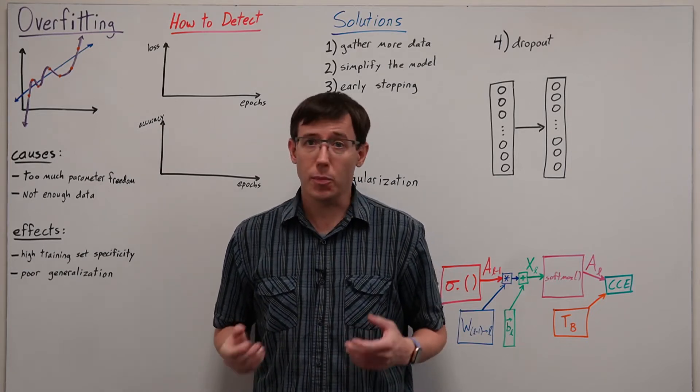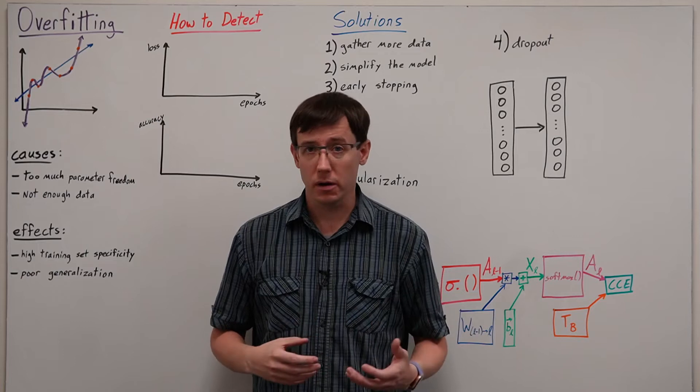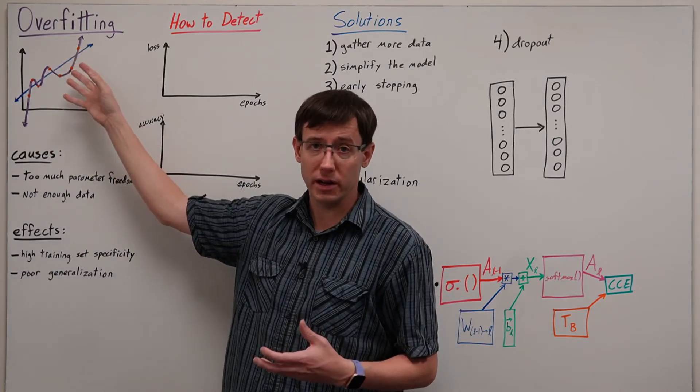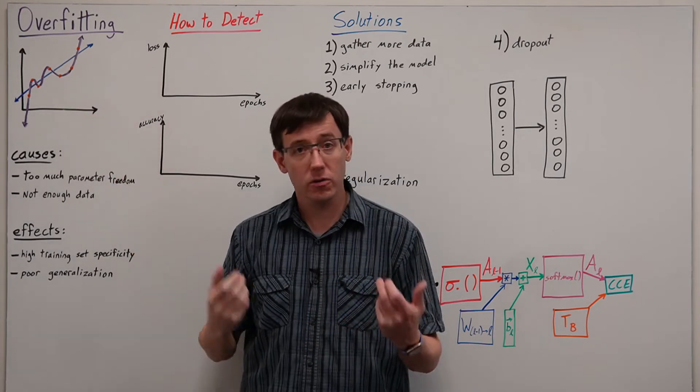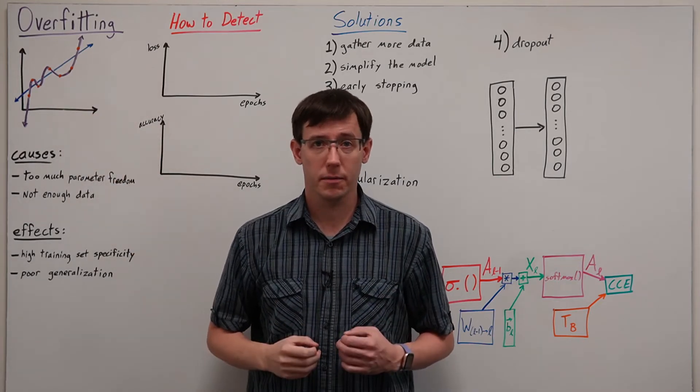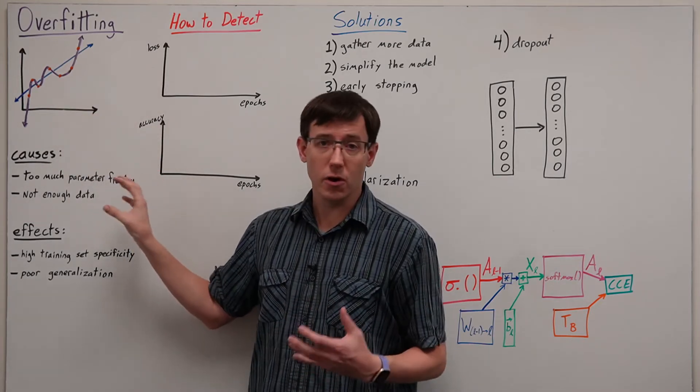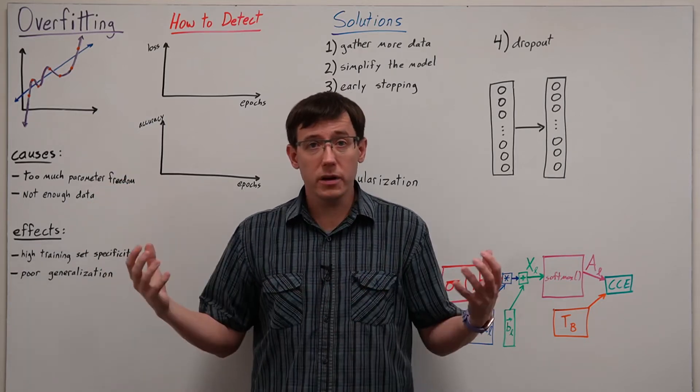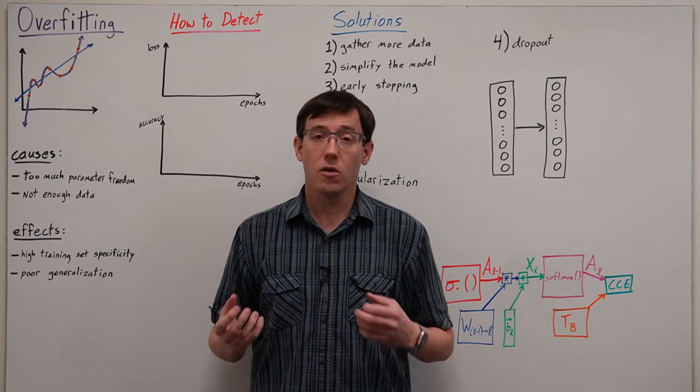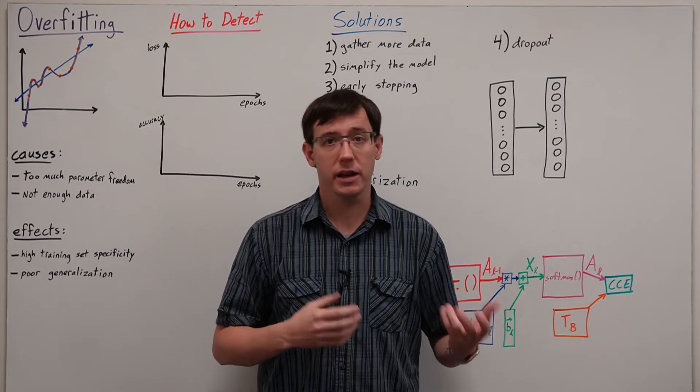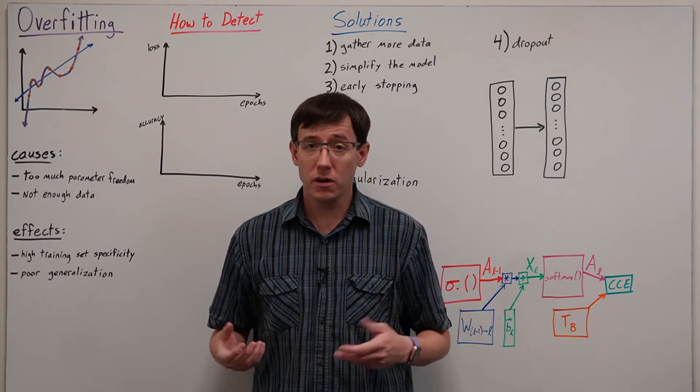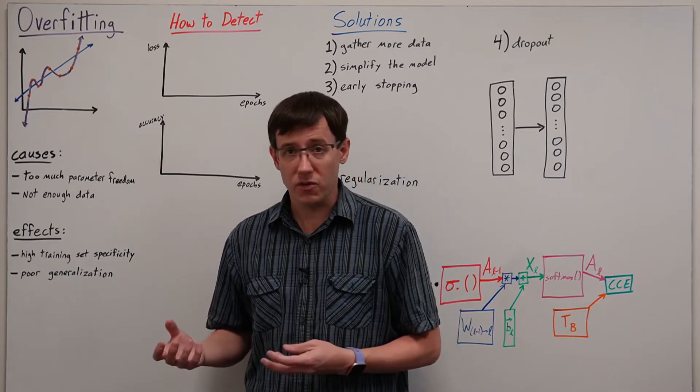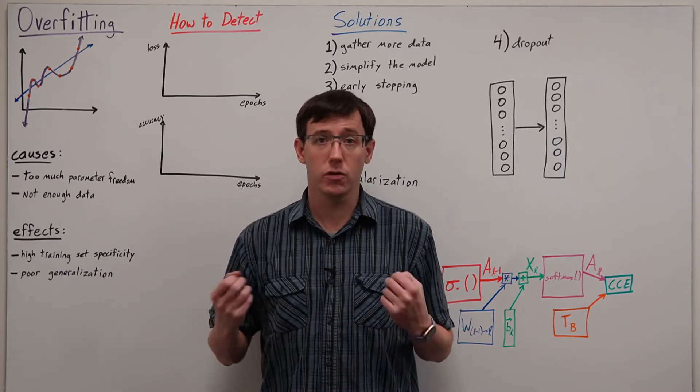In general, overfitting is the problem of a machine learning model becoming too specific to its particular training set and not generalizing well to new data. The primary cause of overfitting is when a model has too much freedom in its parameters relative to the amount of data it trains on. And so models with a high degree of freedom or with small training sets are the most prone to overfitting.